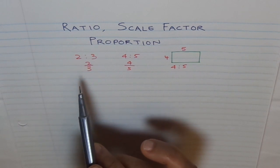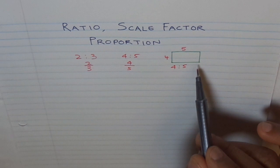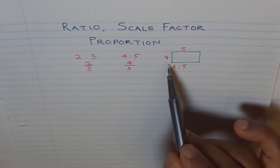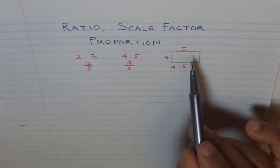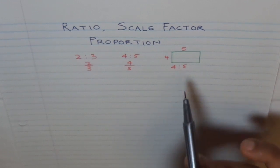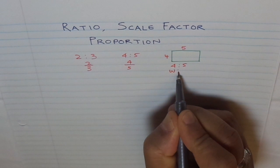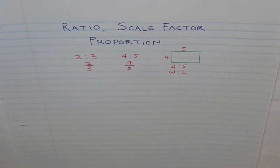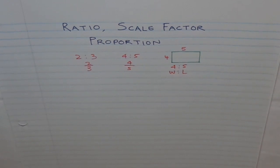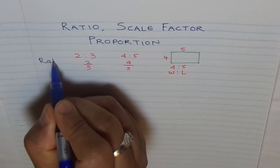Ratios are used when we are comparing two similar things — like dimensions of a rectangle, where one may be width and the other length. Width to length is in the ratio of 4 is to 5. It is a good idea to always specify what to what. That is how we talk about ratio.